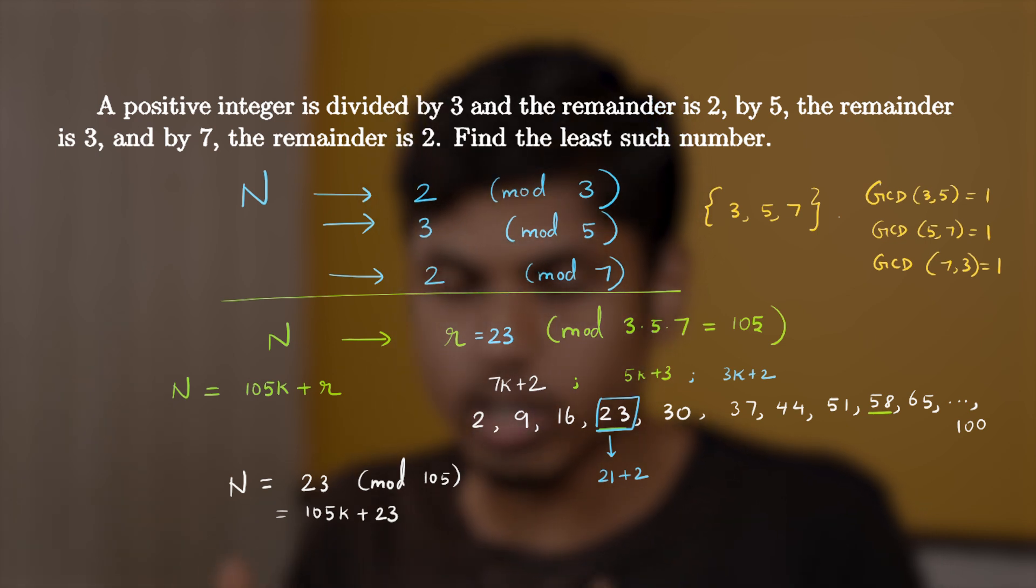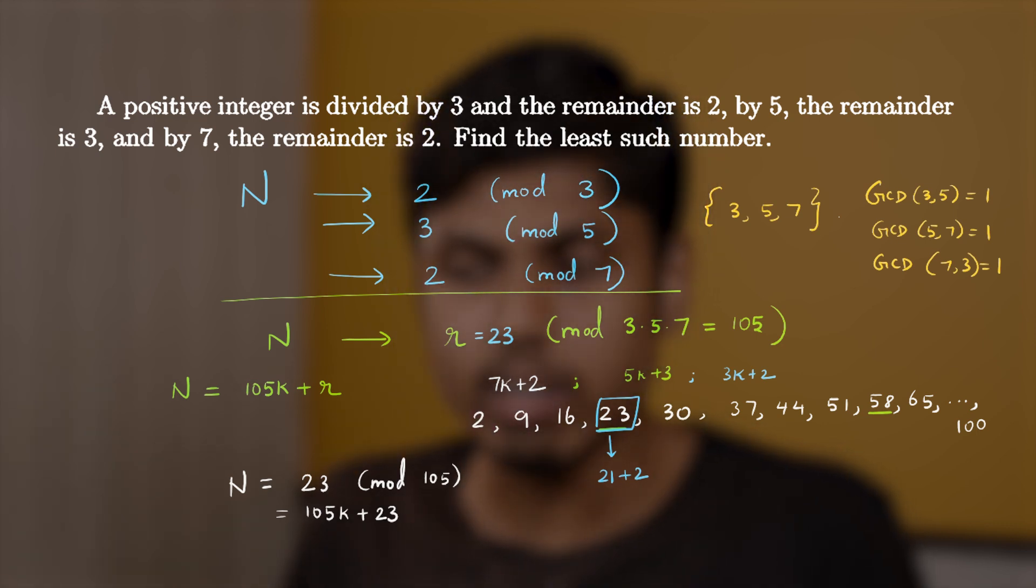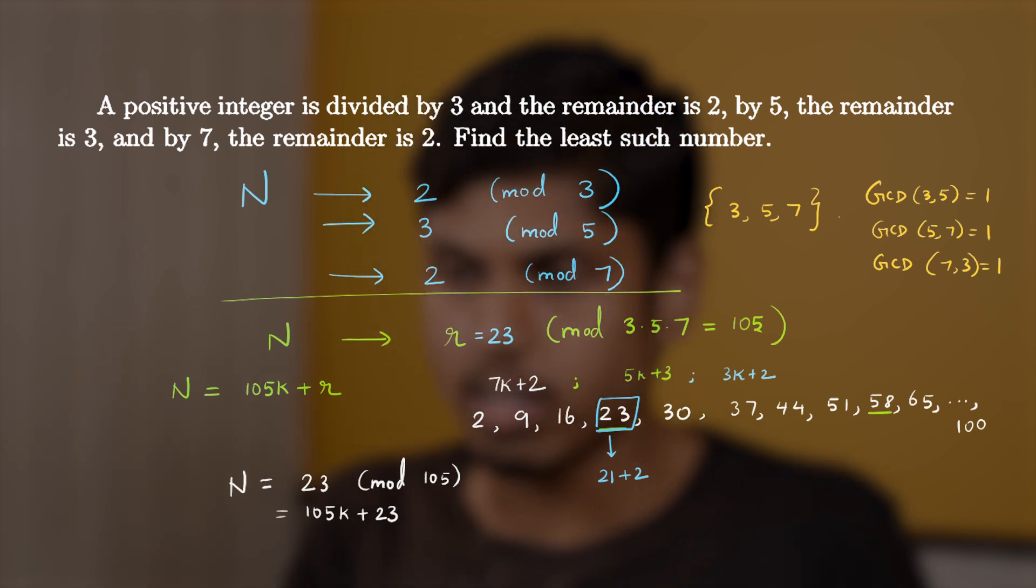For example, k equal to 0 will give you 23, k equal to 1 will give you 128 and so on. Even k can be negative. But here, we are thinking about positive integers, right? So we should disregard k being negative. So the least number would be 23.